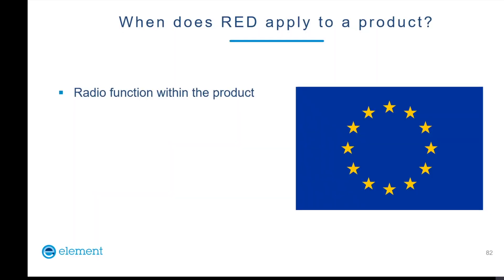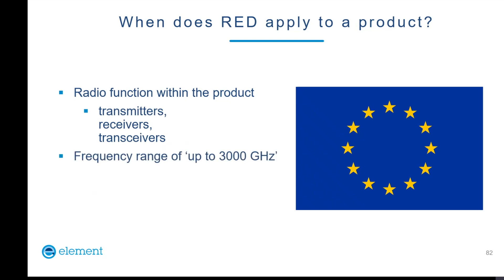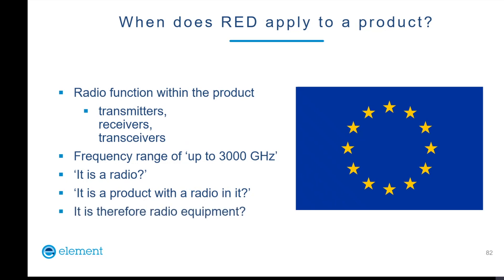What defines Radio Equipment, or when does the Radio Equipment Directive apply to your product? Well, if your product has any radio function within it — whether that's a transmitter, a receiver, or a transceiver — and the frequency range of that radio is up to 3000 gigahertz, down to any frequency, then it's a radio. And whether you designed it to be a radio or included somebody else's radio module in your product, it is therefore radio equipment because it's a piece of equipment with a radio feature inside it.